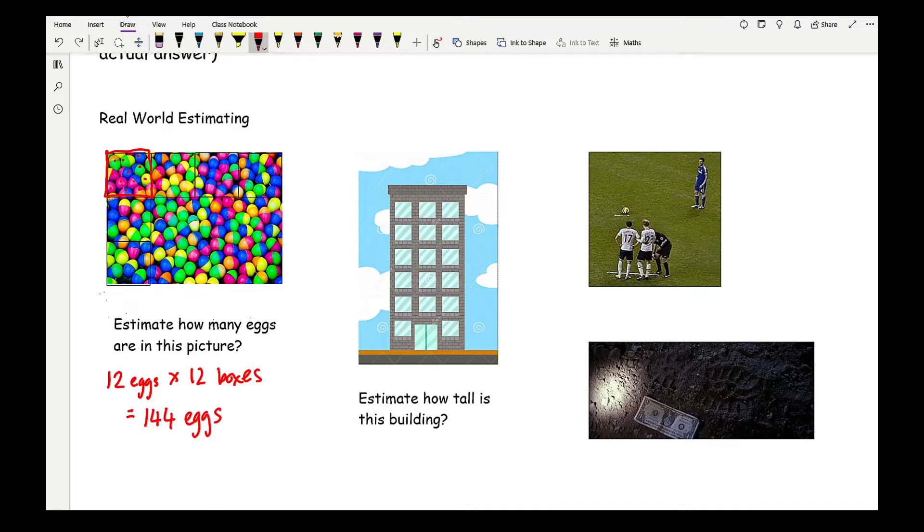Now if the question asks me how tall is this building, I'd probably know that if a door is about two metres, then how many doors would it take to reach the top of this building? So that would be two, I would say four, six, eight, ten, twelve. So I'd say roughly around twelve metres tall.